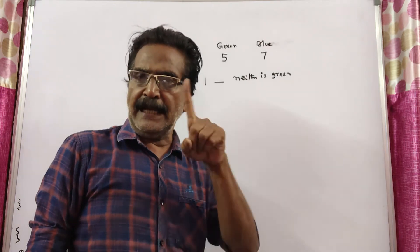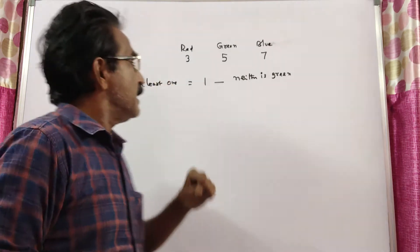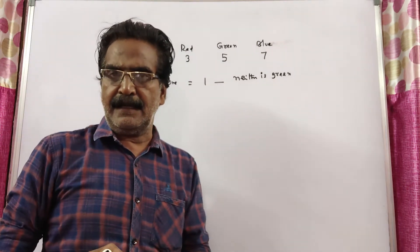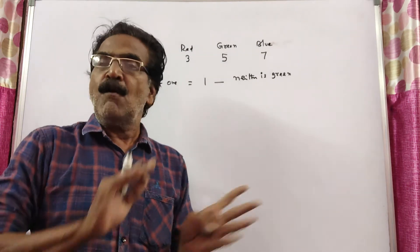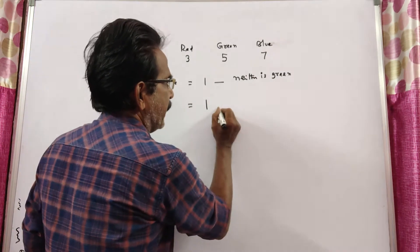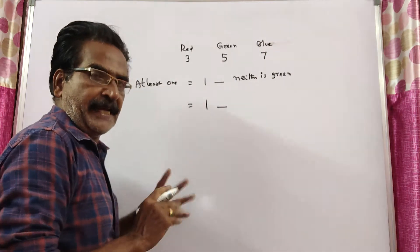We know one thing: at least 1 is equal to 1 minus neither is green.